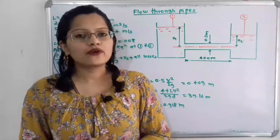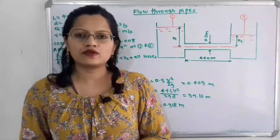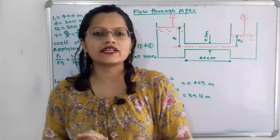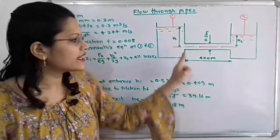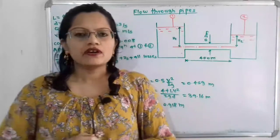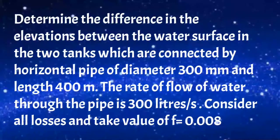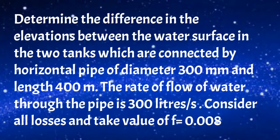Hello friends, this is Priyanka. Today we are going to solve a problem on flow through pipes. We are going to find out the difference between the elevation of the water surface in two tanks which are connected to a horizontal pipe. The problem: determine the difference in elevation between the water surfaces in two tanks connected by a horizontal pipe of diameter 300 mm and length 400 m. The rate of flow of water through the pipe is 300 liters per second. Consider all losses and take the coefficient of friction F equal to 0.008.